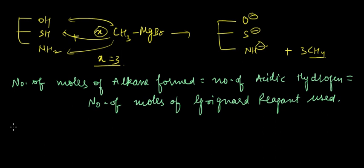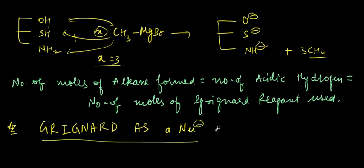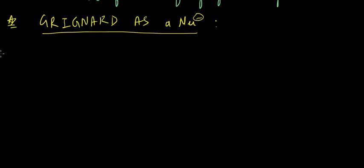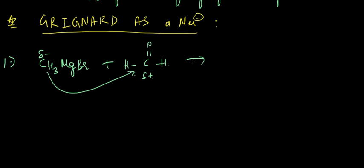Okay, now we'll be seeing something like Grignard as a nucleophile. Now in this case, let's understand this with the help of an example. We have something like CH3MgBr and we have an aldehyde. So this is partial positive and this is partial negative, so what will happen is this will act as a nucleophile and will attach itself to this carbon atom.